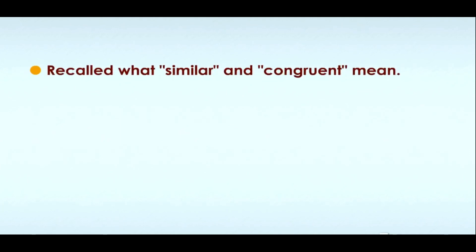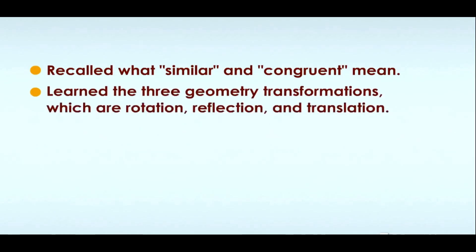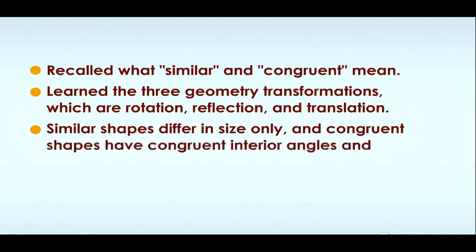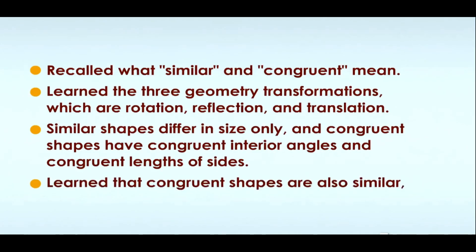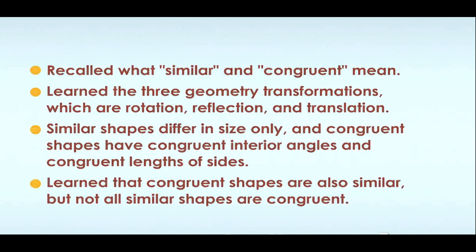Now that you have worked through this lesson, you have recalled what similar and congruent mean and learned the three geometry transformations, which are rotation, reflection, and translation. You also know that similar shapes differ in size only, and congruent shapes have congruent interior angles and congruent lengths of sides. You also learned that congruent shapes are also similar, but not all similar shapes are congruent.